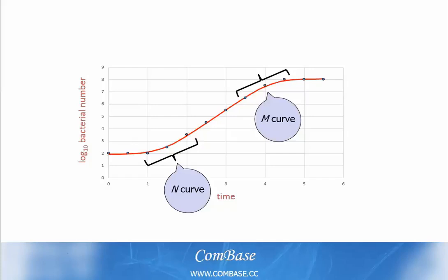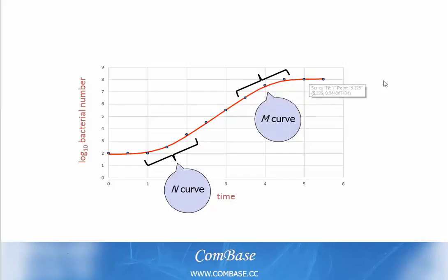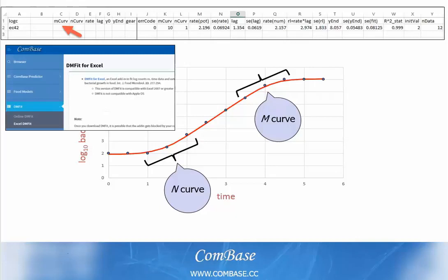The transition from the growth phase to the maximum population density phase is referred to as the M curve. Again, it's a distribution of bacterial growth rates as they leave the growth phase and transition into the stationary phase where replication ceases. If you use the DM fit for Excel, you've seen the M curve function.